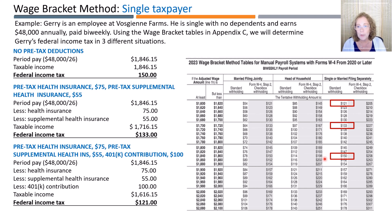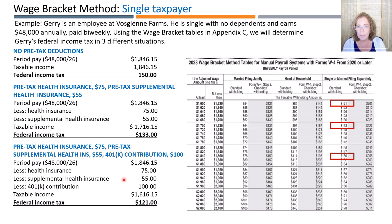How do the withholdings change when Jerry has pre-tax deductions for health insurance of $75 and supplemental health insurance deductions of $55? Jerry's taxable income decreases to $1,716.15 because the insurance contributions are pre-tax deductions. We now look up $1,716.15 in the tax table and find $133 for tax withholdings. Our last example is like the second example, but we have an additional pre-tax deduction for 401(k) of $100, which lowers the taxable income to $1,616.15. Going back to the tax table, we find the correct row for the taxable income of $1,616.15, which gives $121.